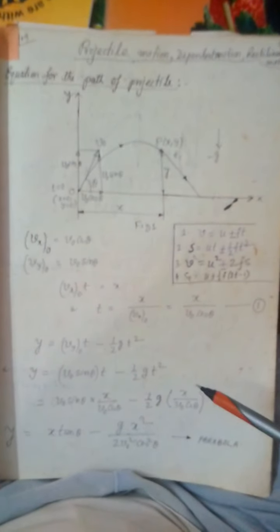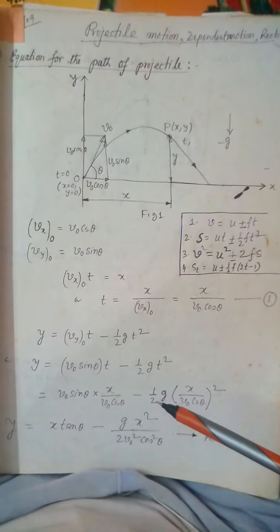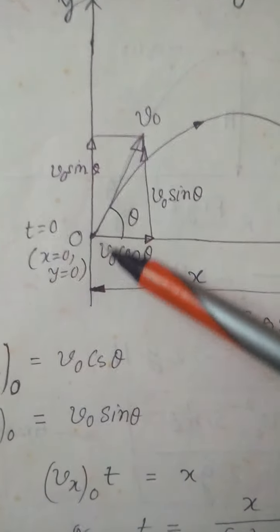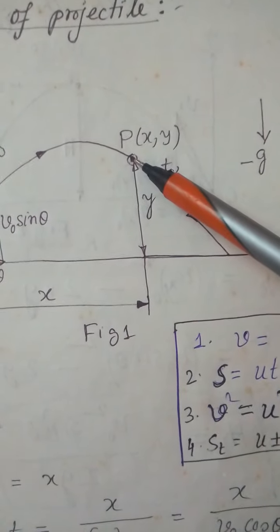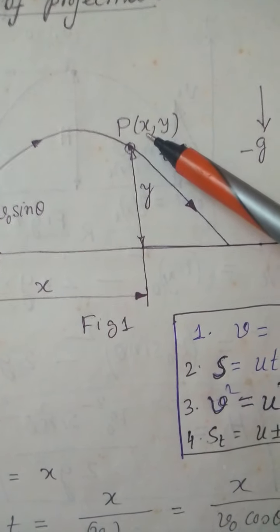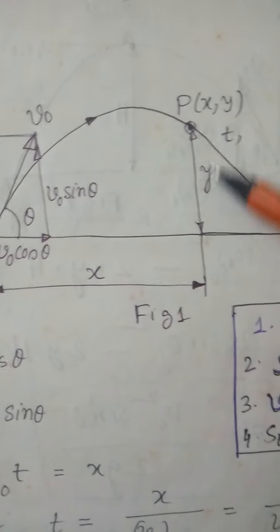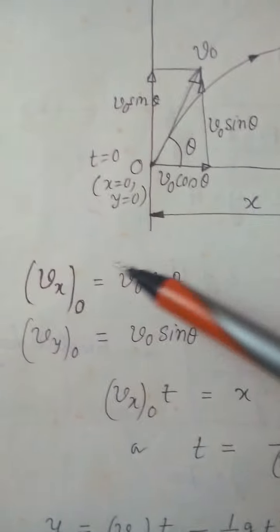Now we have to find out the path of the projectile. At time t equal to zero, the projectile is at the origin. At time t, the projectile passes through point P with coordinates (x, y), meaning this horizontal distance is x and this vertical distance is y. We will now apply the formulas.